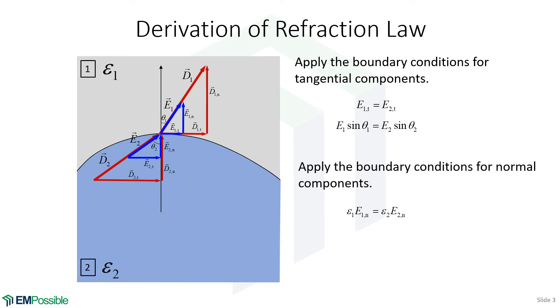We can get a second equation by applying the boundary conditions for the normal components of the electric field intensity. Remember here, the normal component of the electric field intensity is not continuous across the interface, but the product of the permittivity and the normal component is continuous across the interface.